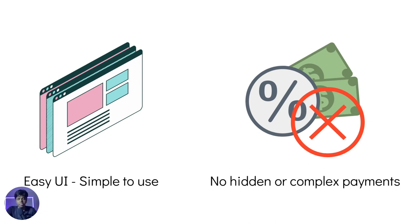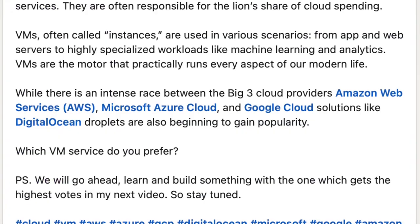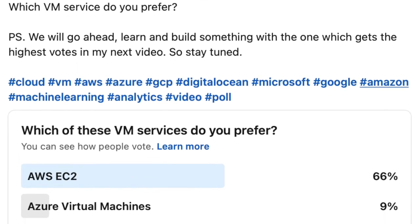The number of features in DigitalOcean is comparatively much less than AWS, which actually makes it a dedicated platform for startups or individual developers. So what is the final verdict? Both of them are amazing in their own places and cater to completely different audiences. AWS is good for huge projects or enterprises, whereas DigitalOcean will be better if you're an individual developer or a budding startup working in a dedicated field. Last week there was a poll on LinkedIn comparing various virtual machine services, and AWS EC2 got the highest number of votes as the most preferred VM service. The purpose of this video was to help you understand the difference between these cloud providers — in particular, AWS versus DigitalOcean.